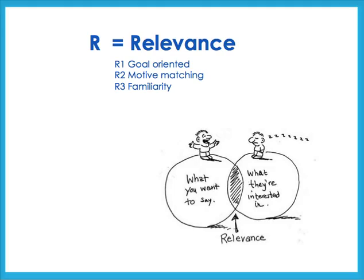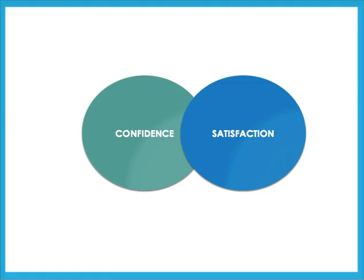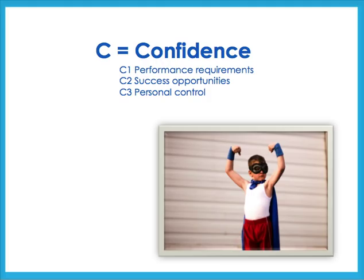The second part of the model — confidence and satisfaction — is a systematic design process that assists the learner's motivational enhancements appropriate for a given set of learners. Confidence involves performance requirements, which uses standards to set expectations and provide evidence of learning. Success opportunity provides diverse ways to learn and succeed. Personal control gives the learner control over what they do so they feel it is they who are succeeding.